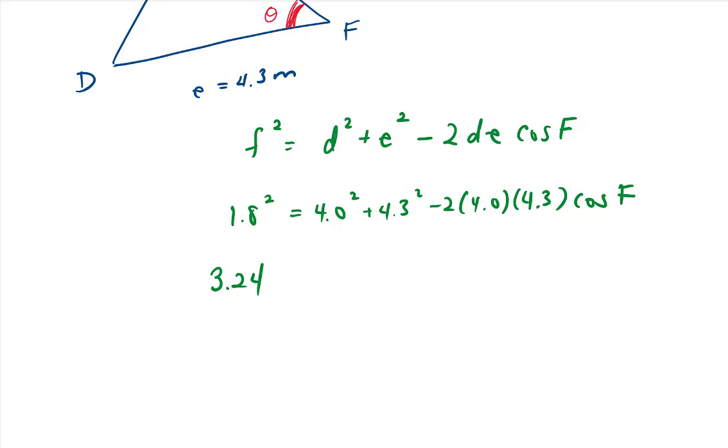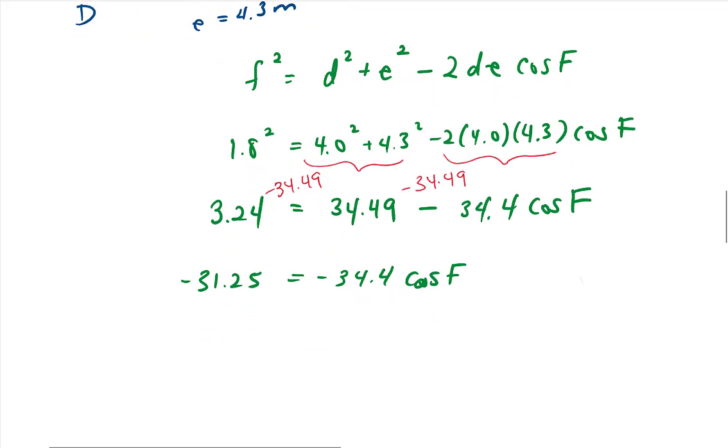On the left side here, we have 3.24. Taking these two squares here, we end up with 34.49. And then minus, if we simplify this here, gives us 34.4 cos F. Now a lot of students will try to combine these two here. But since 34.49 does not have a cos F attached to it, we need to move it to the other side to isolate for F. So our first step is to get rid of that 34.49 and bring it to the left side. And that will give us -31.25 = -34.4 cos F.